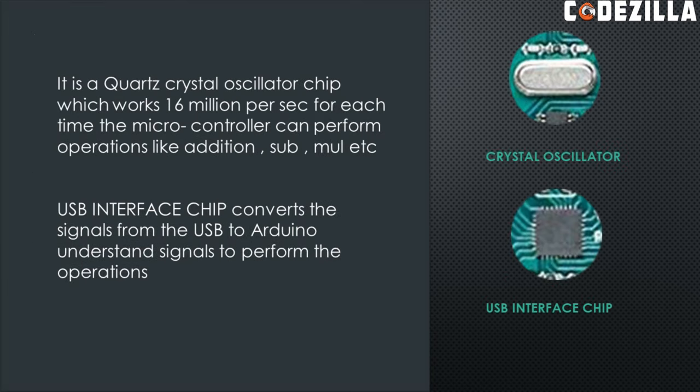Crystal oscillator. The crystal oscillator is made of quartz, so it is called a quartz crystal oscillator chip, which works 16 million times per second. For each cycle, the Arduino microcontroller can perform operations like addition, subtraction, multiplication, and other arithmetic operations as well.